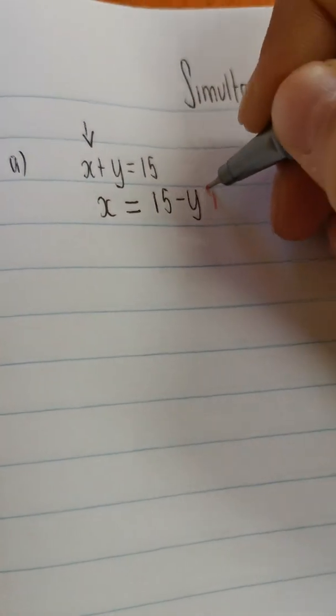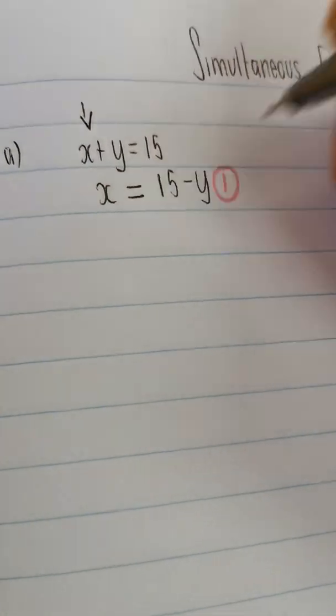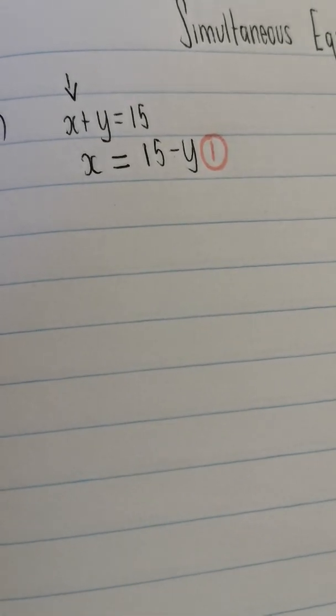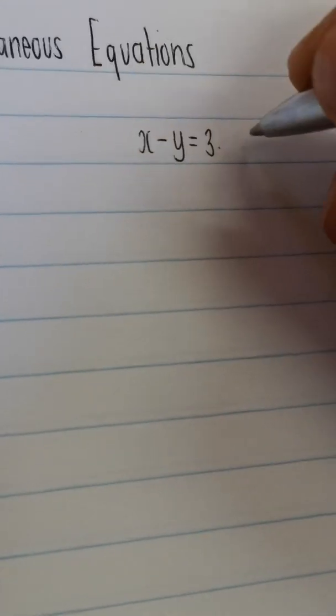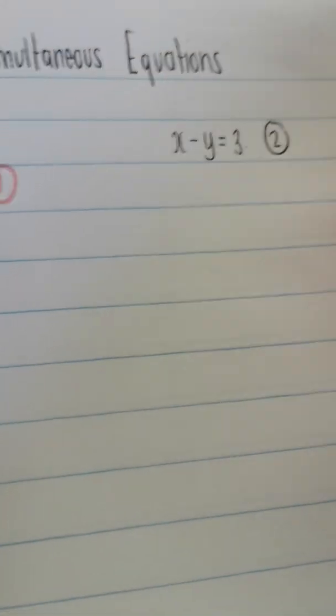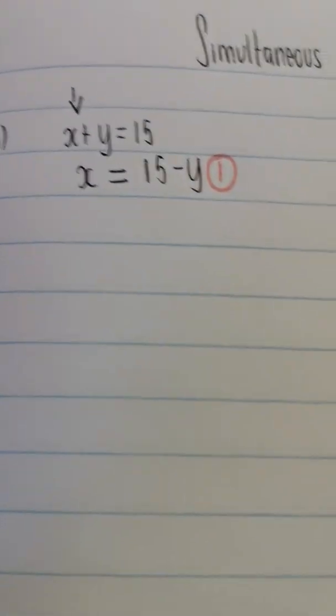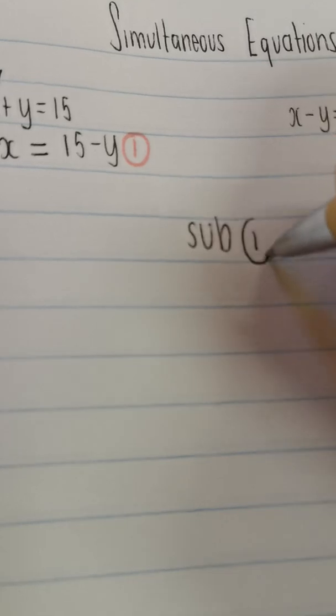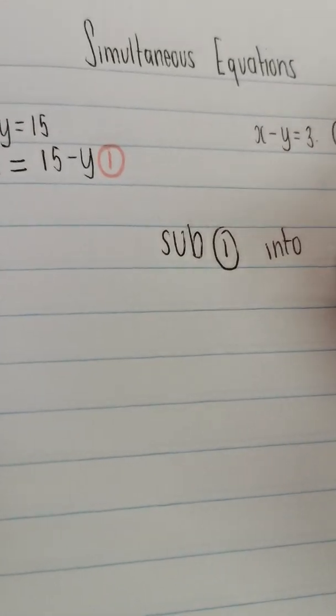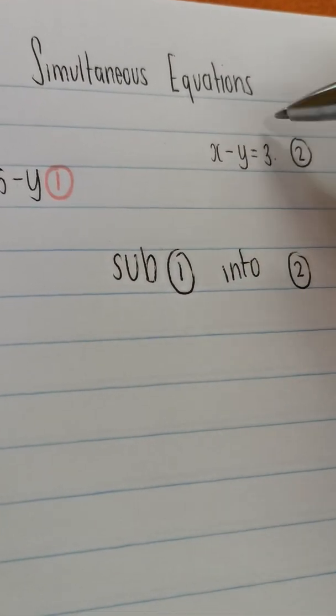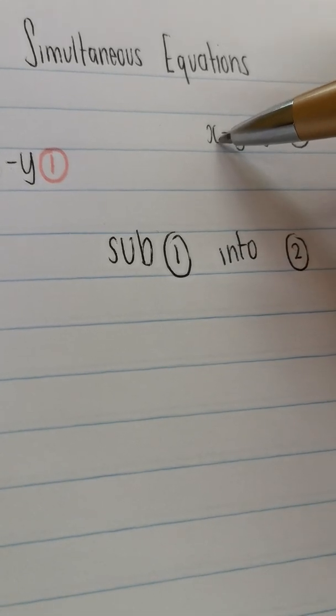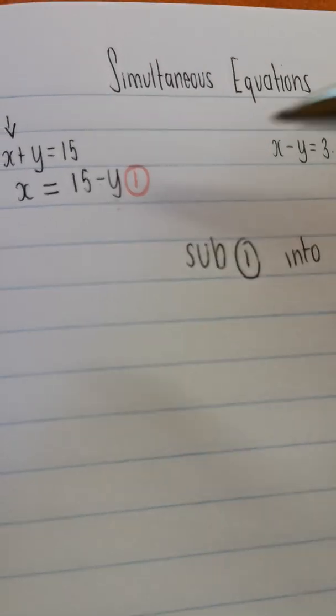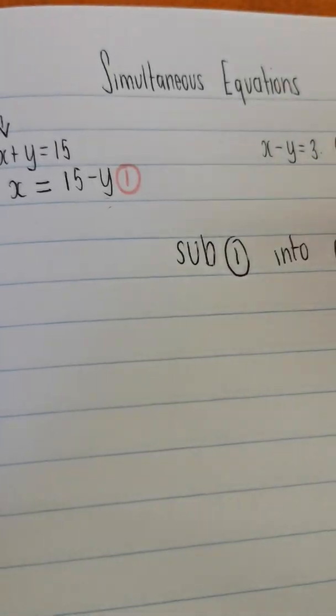This here, I'm going to name as equation 1. And then that means if this is equation 1, this one here is equation 2. What we're now going to do is we're going to substitute equation 1 into equation 2, which means that everywhere in equation 2 where I see an x, I'm going to replace it with whatever x is over here. And in this case, my x is 15 minus y.